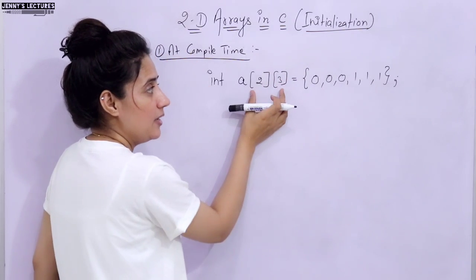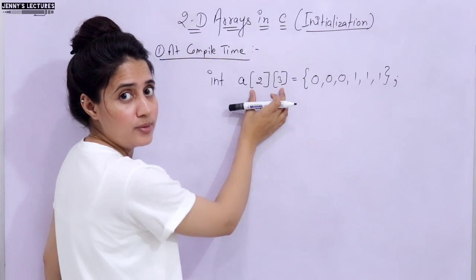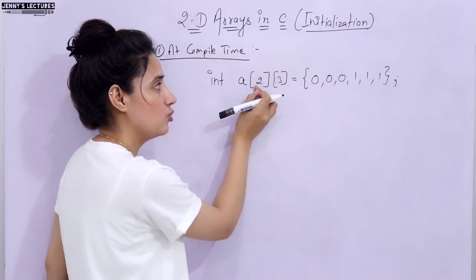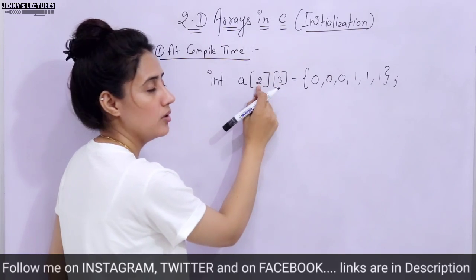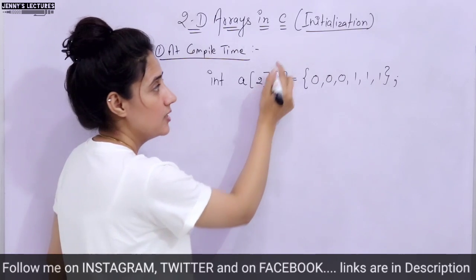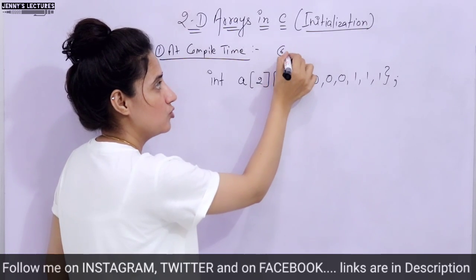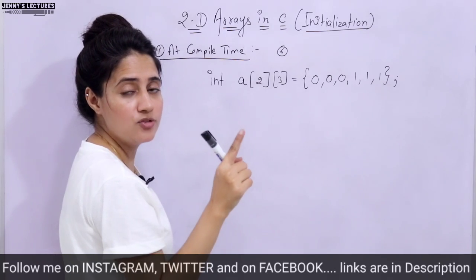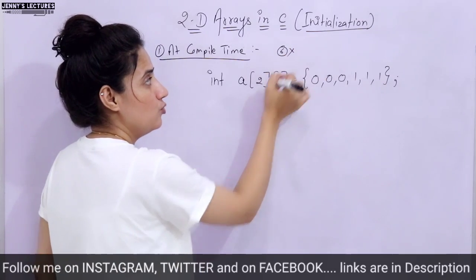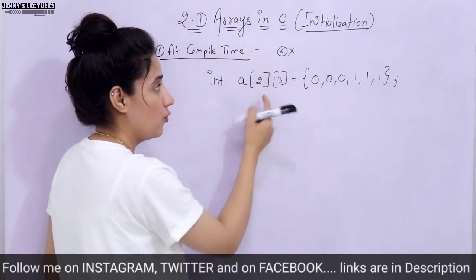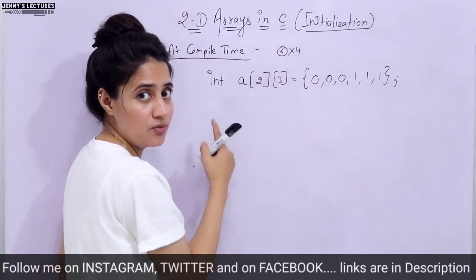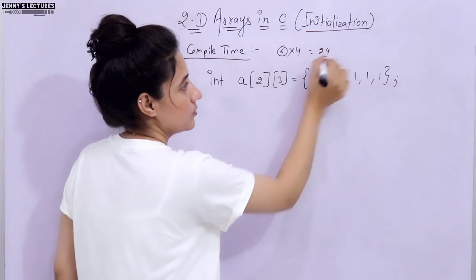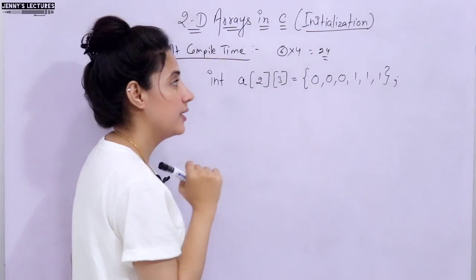Now, how many elements total are there in this 2D array? Row size multiplied by column size: 2 into 3 equals 6 elements. How many bytes would be allocated? 6 into 4 bytes, since integer takes 4 bytes. So 24 bytes would be allocated here.